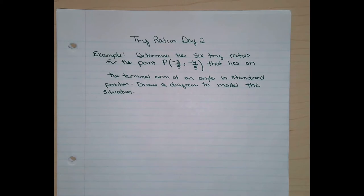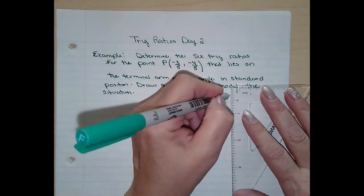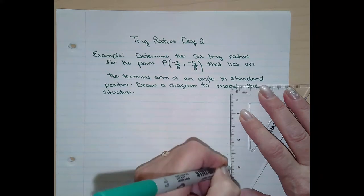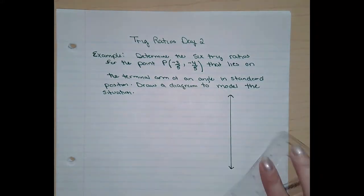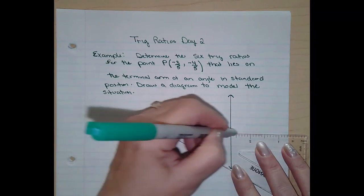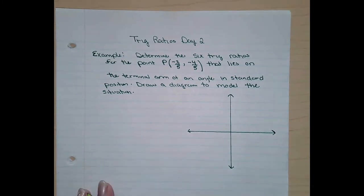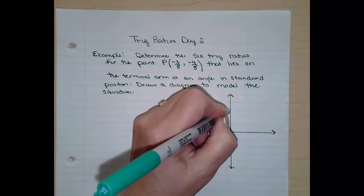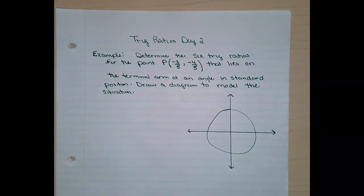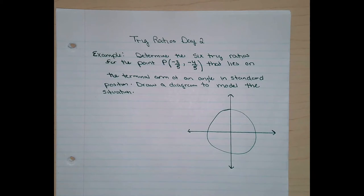Let's draw a picture so you can see what you're looking at — it always makes more sense. Here is my X-Y axis and here is my unit circle. The point is negative three-fifths, negative four-fifths.